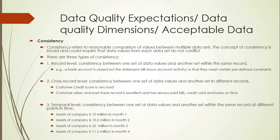Cross-record level consistency compares one set of data values against data in different records. For example, in India, a customer might have a very bad CIBIL score, but their salary is good, they have many years until retirement, and their track record shows they've always paid bills, credit card dues, and loans on time. These are inconsistent — if everything else about the customer is good, how is their credit score low? That inconsistency across different datasets needs to be investigated.